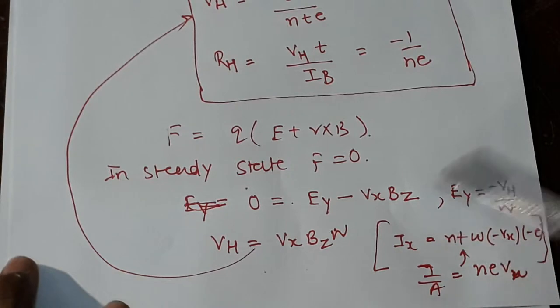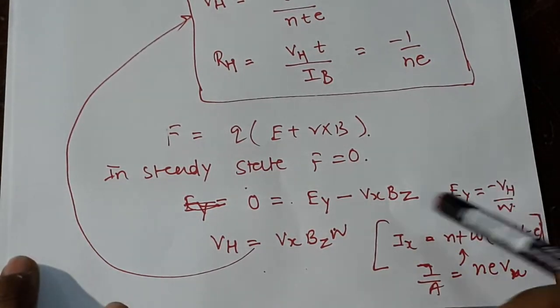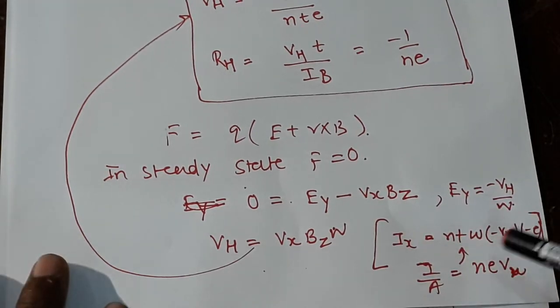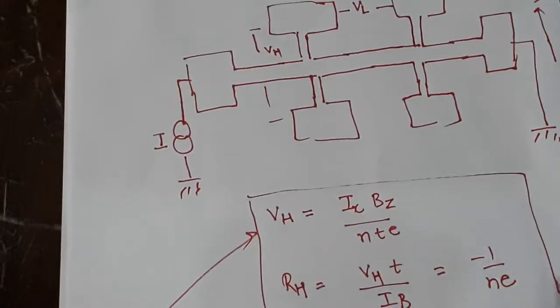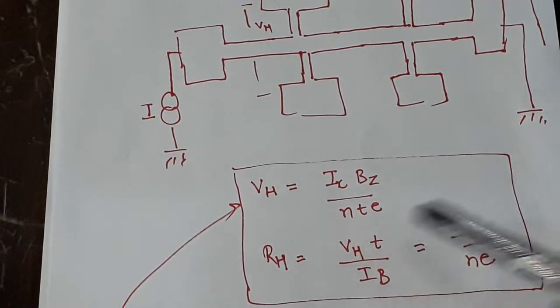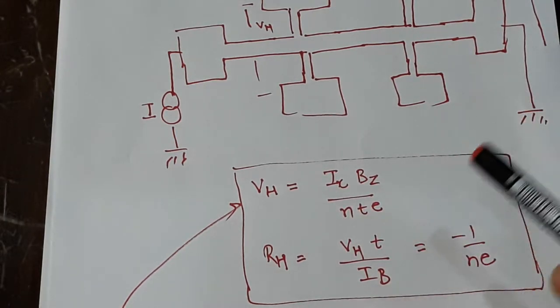The derivation is simple. I won't go through it, but I'll give you the formula. It's just Lorentz force at steady state where F is zero. You plug in all formulas, for example j equals nevd where vd is drift velocity, and in the end you get this.